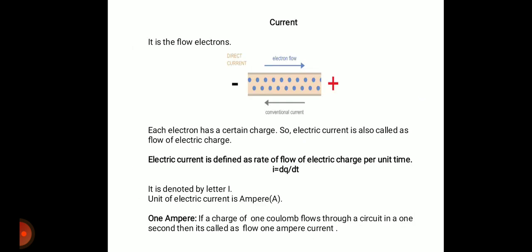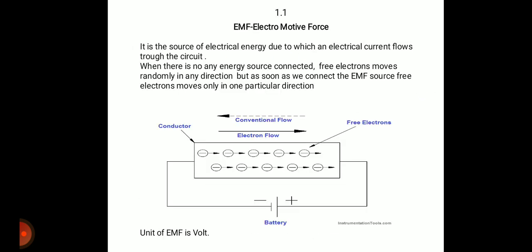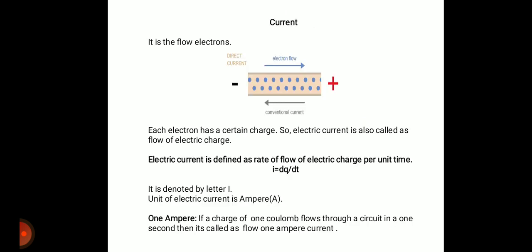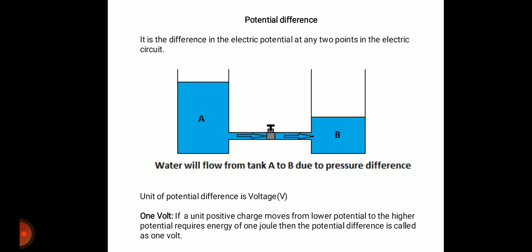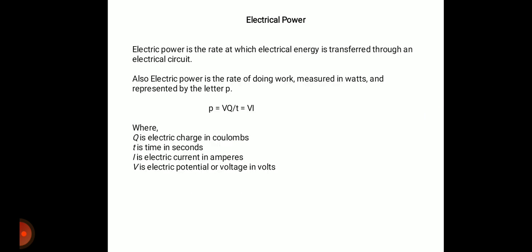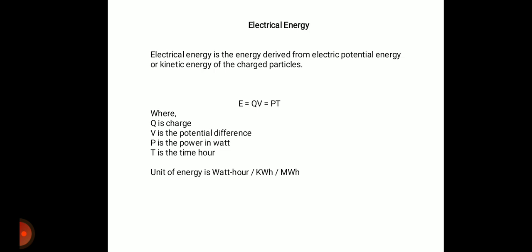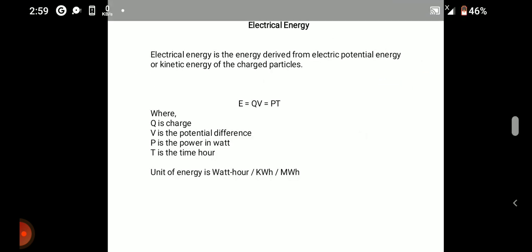To summarize: electromotive force is the electrical energy due to which electrical current starts flowing — example is battery. Current is the flow of electrons or flow of electric charge, denoted by letter I, unit is ampere. Potential difference unit is volt. Electrical power unit is watt. Electrical energy unit is kilowatt-hour.